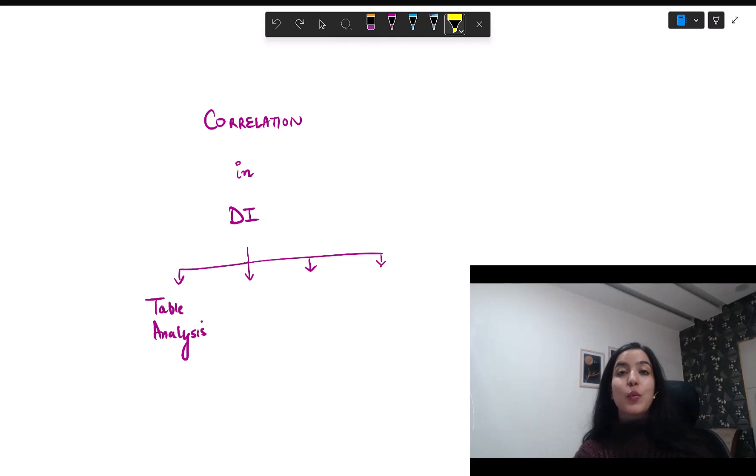Hello there, in this video we will discuss the application of a very important concept, correlation, on the GMAT. Comprehending correlation is essential for interpreting data in a range of GMAT questions, particularly in table analysis questions, which is found in the data insights section of the GMAT focus edition.